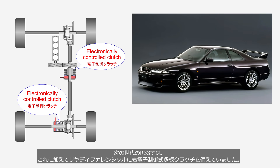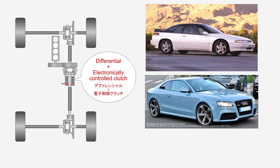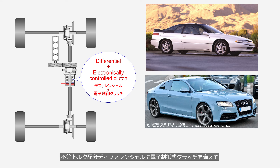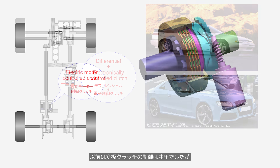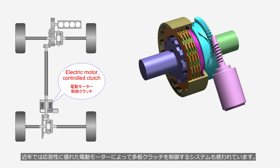In the next generation R33, the rear differential was also equipped with an electronically controlled multi-plate clutch. There are also models equipped with an electronically controlled multi-plate clutch in the center differential. The Subaru and Audi systems mentioned earlier also feature electronically controlled clutches in their uneven torque distribution differentials, allowing control of engine output distribution to the front and rear wheels depending on the situation. Previously the control was hydraulic, but in recent years, electric motors with superior responsiveness have also been employed to control the multi-plate clutch.